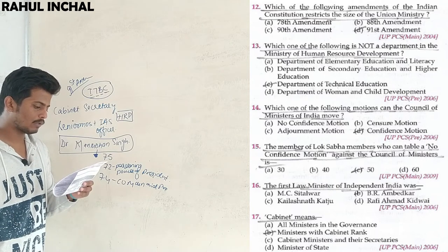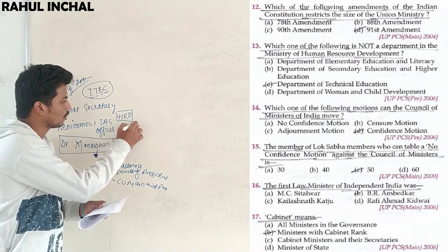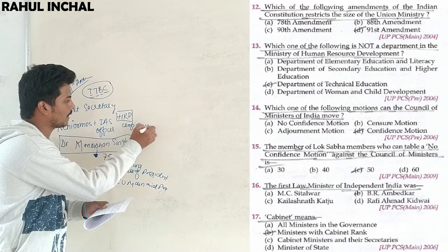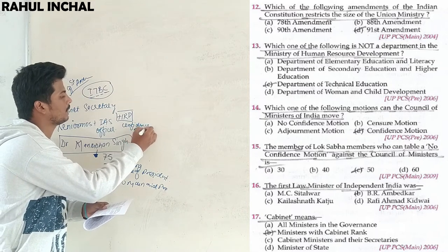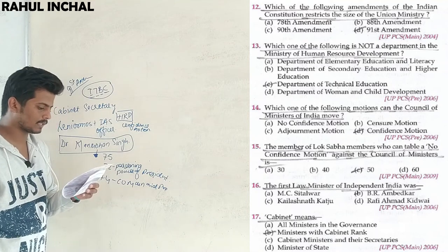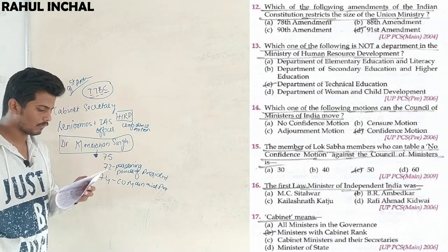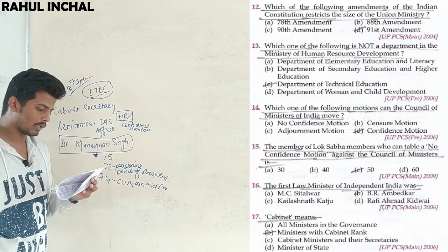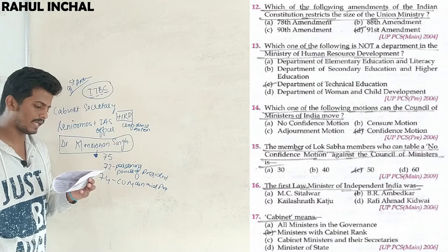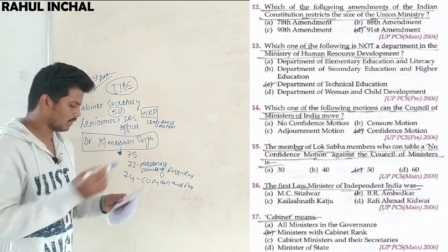Which motion can the Council of Ministers of India move? That is the Confidence Motion — the Council of Ministers can move a Confidence Motion. A No-Confidence Motion can only be passed in Parliament by members of the Lok Sabha. The number of Lok Sabha members required to table a No-Confidence Motion against the Council of Ministers is 50.